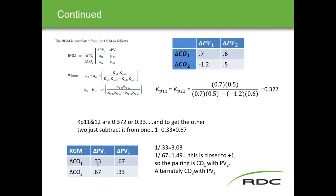These columns and rows have to equal one. Once you figure out the six and seven, the bigger number out of a pairing is going to give you a lower number here, so really you're picking the bigger pairing. Your choices are PV2 and CO2 — you're looking for the number closest to one. CO1 with PV2 is 0.67, and CO2 with PV1 was also the 0.67 number. The ILM seems more focused on this pairing and this number.